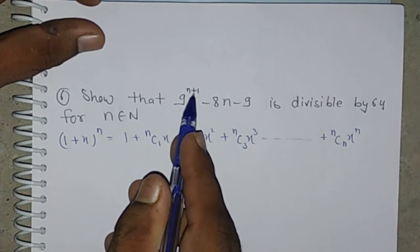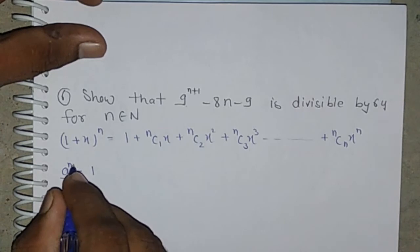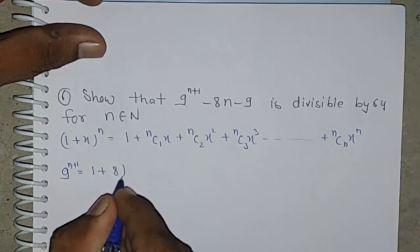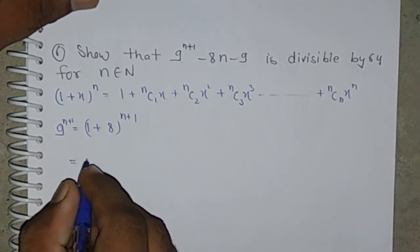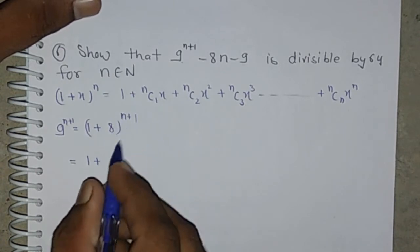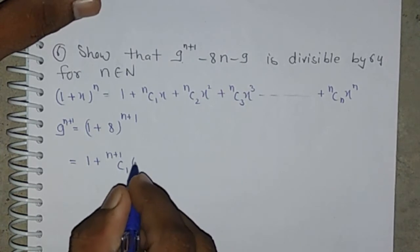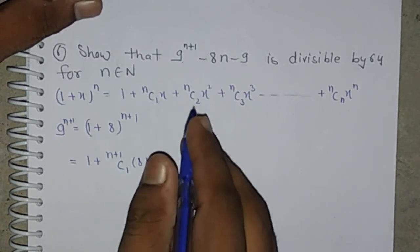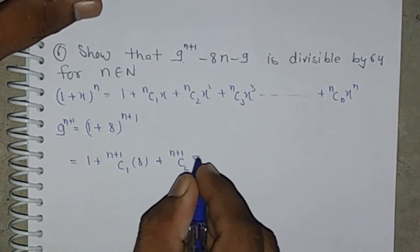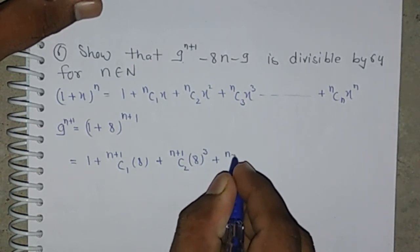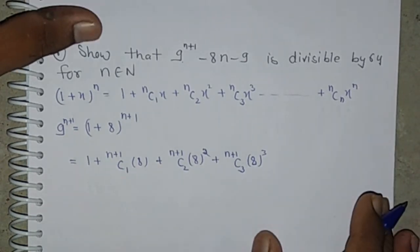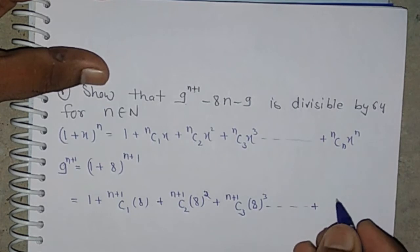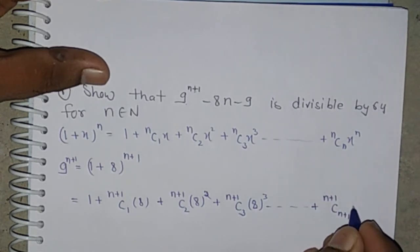Now, 9 to the power n plus 1 can be written as 1 plus 8 to the power n plus 1. Expanding using the binomial theorem with n replaced by n plus 1 and x equal to 8, we get: 1 plus (n+1)C1·8 plus (n+1)C2·8 squared plus (n+1)C3·8 cubed plus ... plus (n+1)C(n+1)·8 to the power n plus 1.